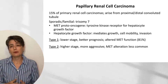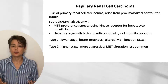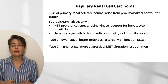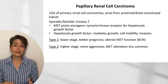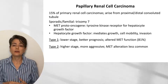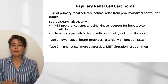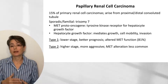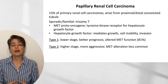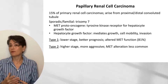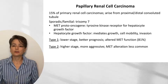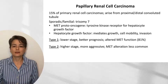Papillary renal cell carcinoma is divided into type 1 and type 2. Type 1 tends to present at a lower stage, has a better prognosis, and about 80% of those cases have altered MET function. Type 2 tends to present at a higher stage, is more aggressive with worse prognosis, and MET alteration is less common.